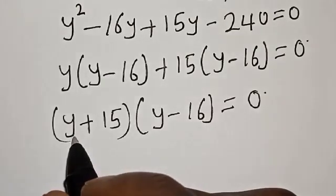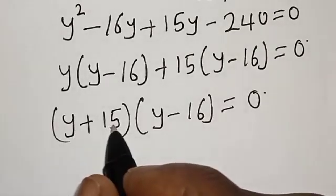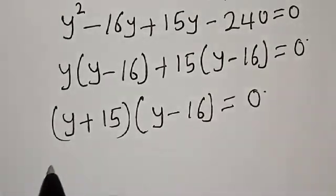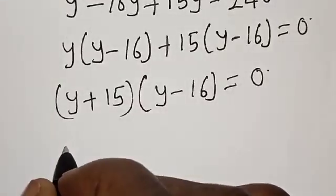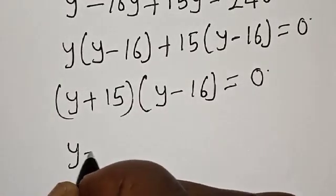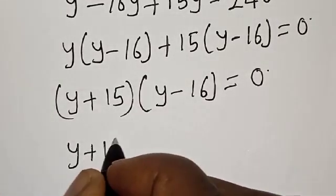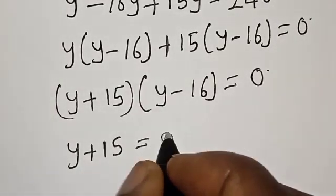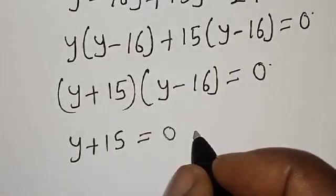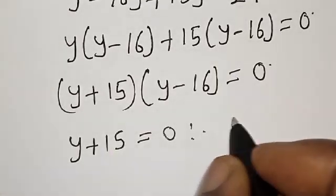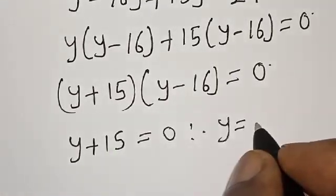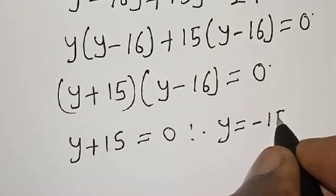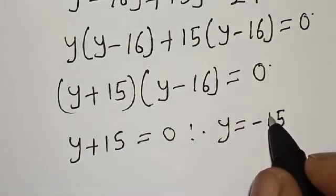We equate either y plus 15 is equal to 0 or y minus 16 is equal to 0. From y plus 15 equals 0, therefore y is equal to minus 15.